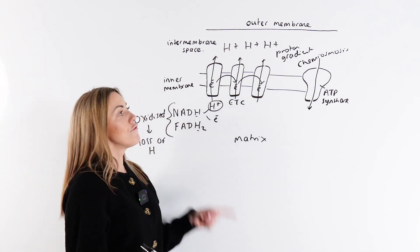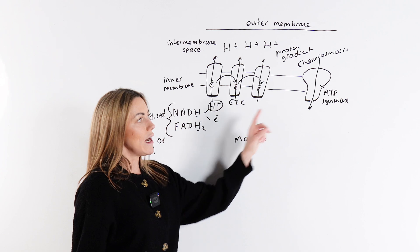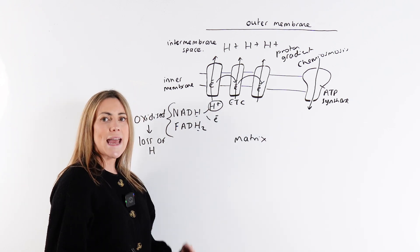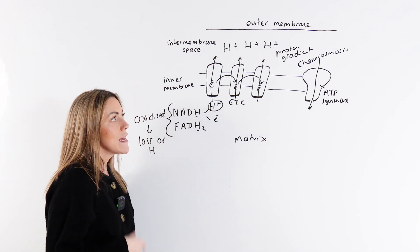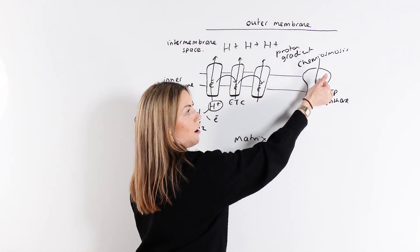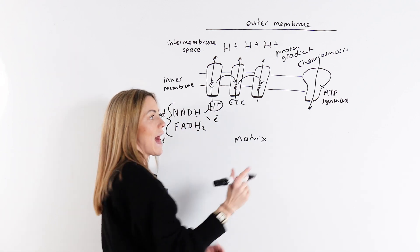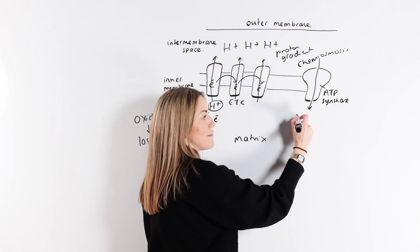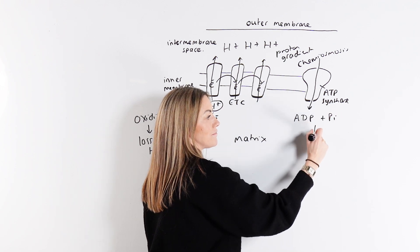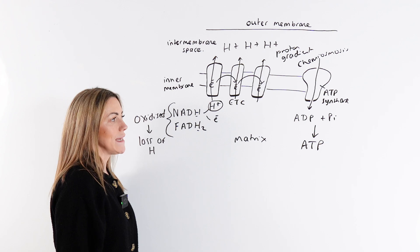This process is called chemiosmosis — the diffusion of protons down the electrochemical gradient drives the formation of ATP by the ATP synthase enzyme. As the protons diffuse through that enzyme, it causes part of the protein to rotate, and that allows the enzyme to make ATP from ADP and inorganic phosphate.